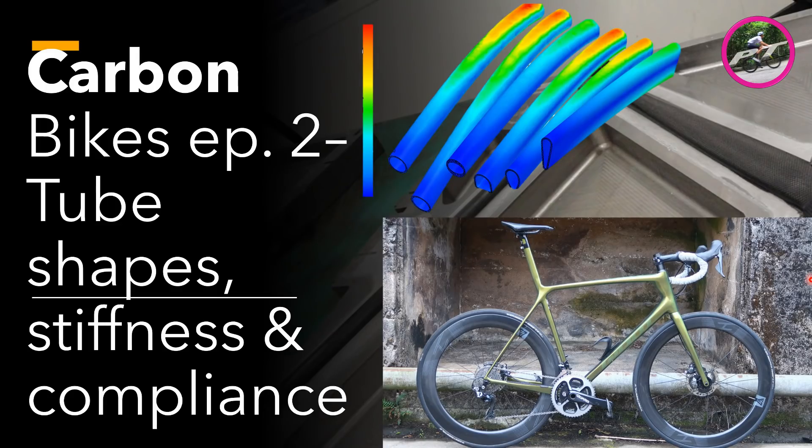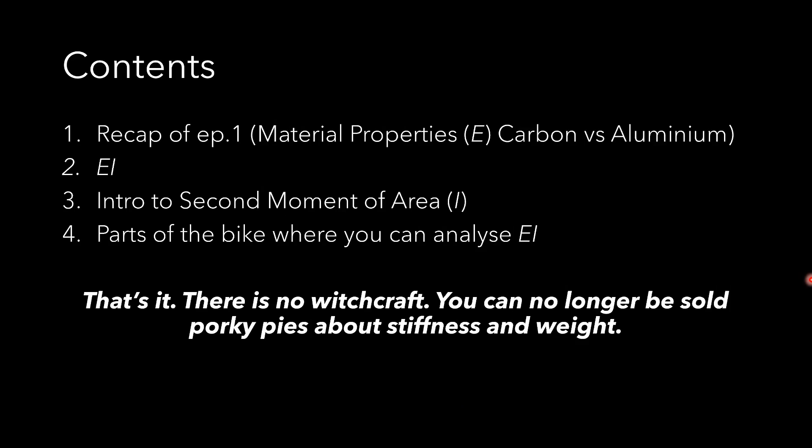Without much further ado, let's get into the detail of tube stiffness. First, a quick recap of what we did in the first video — Young's modulus, which we call E, for carbon and aluminium. But to evaluate a tube or frame stiffness we need to take into account EI, which is a combination of E and I. In this video we'll spend time looking at what I is — the second moment of area — and then look at parts of the bike where we can use this to analyze stiffness and compliance of one frame versus another.